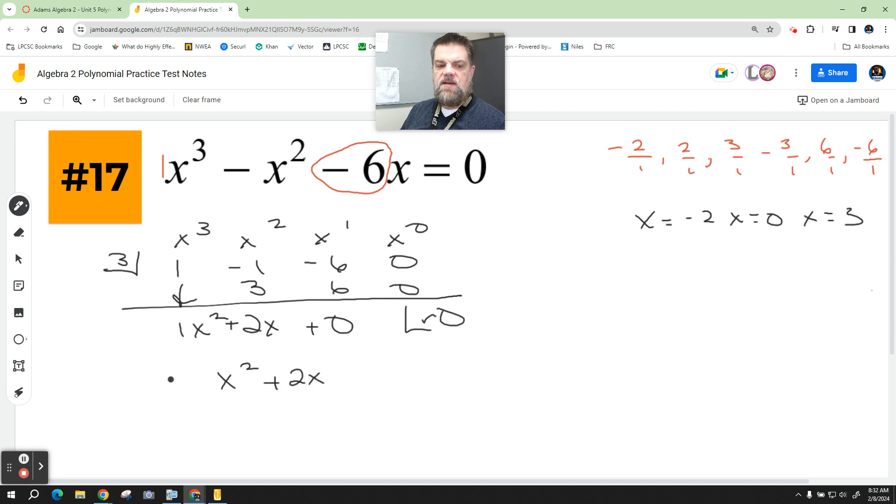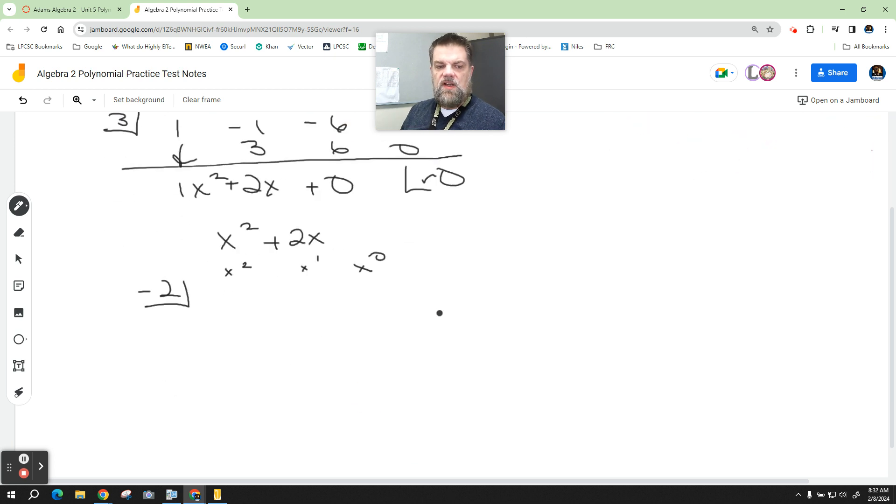So now I'm going to do the same thing with negative 2. So I have negative 2. And then my coefficient, remember, I have to have an x squared, I have to have x to the first, and I have to have x to the 0. So the coefficient is 1. So I put 1, 2, and 0.